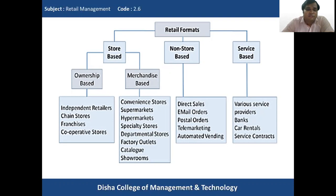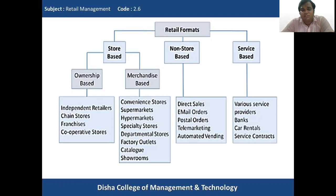Under store-based formats, we completed both the ownership-based and merchandise-based retail formats. Ownership-based formats include independent retailers, chain retailers, franchises, and cooperative stores. Merchandise-based formats include convenience stores, supermarkets, hypermarkets, specialty stores, department stores, factory outlets, and catalog stores.